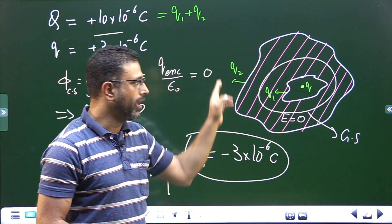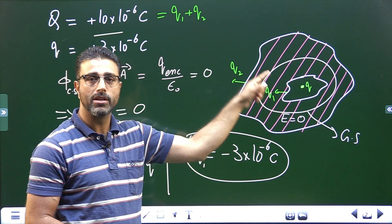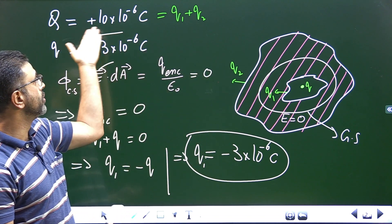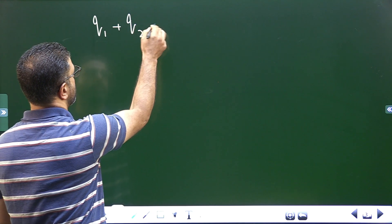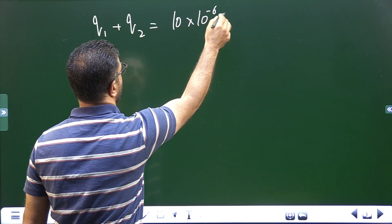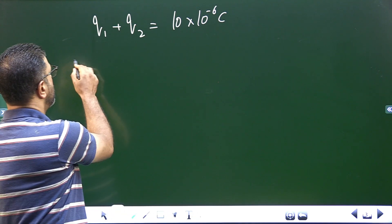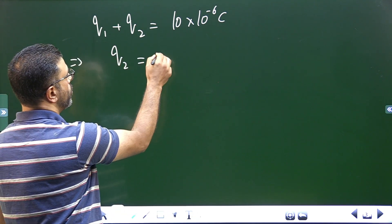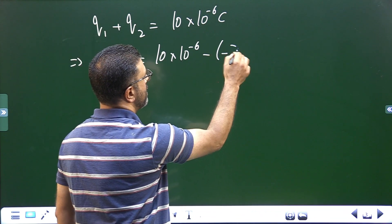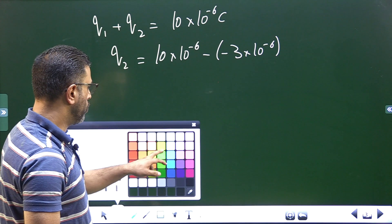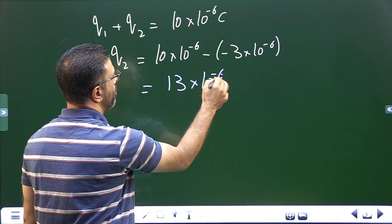Now we find the charge on the outer surface. We know Q1 + Q2 equals the total conductor charge of 10×10⁻⁶ C. Substituting Q1 = −3×10⁻⁶ C: Q2 = 10×10⁻⁶ − (−3×10⁻⁶) = 10×10⁻⁶ + 3×10⁻⁶ = 13×10⁻⁶ C.